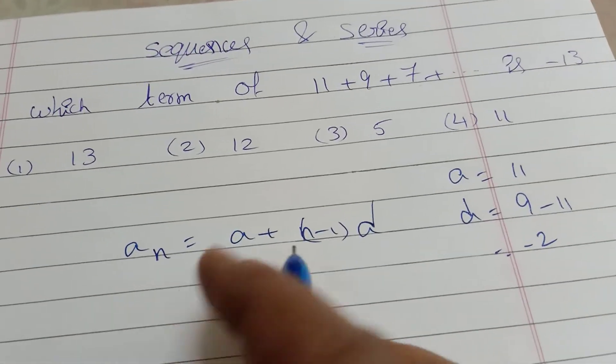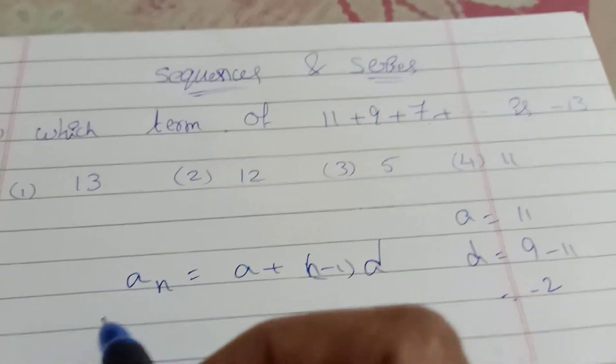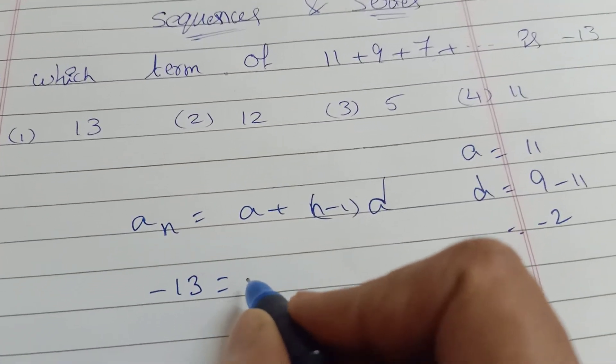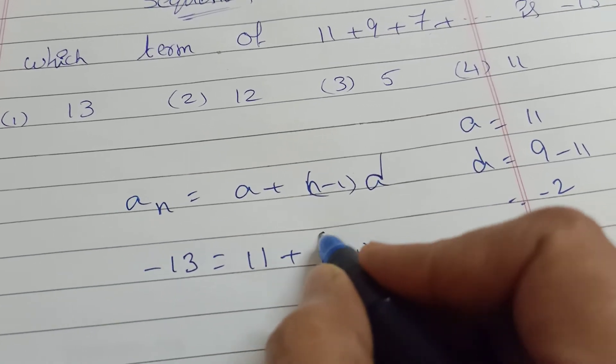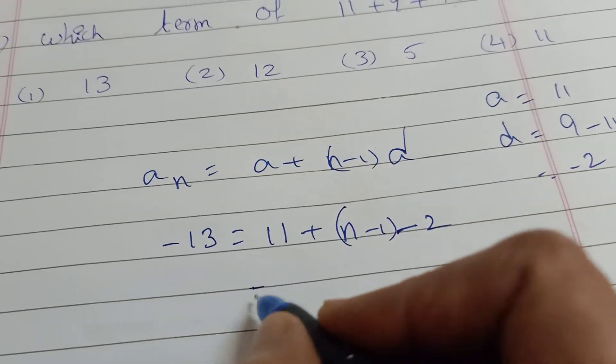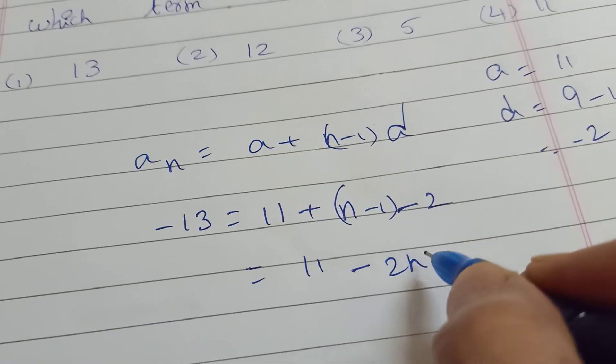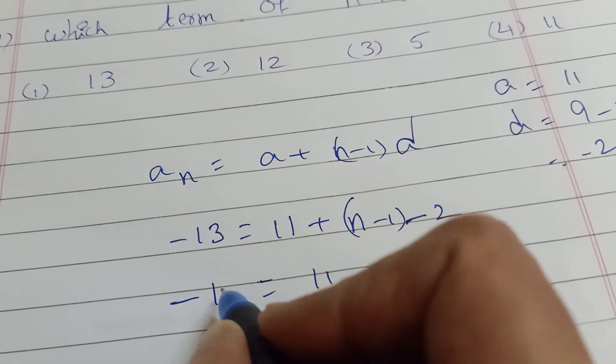Now we write: minus 13 equals a_n. So minus 13 equals 11 plus n into d, which is n times minus 2.